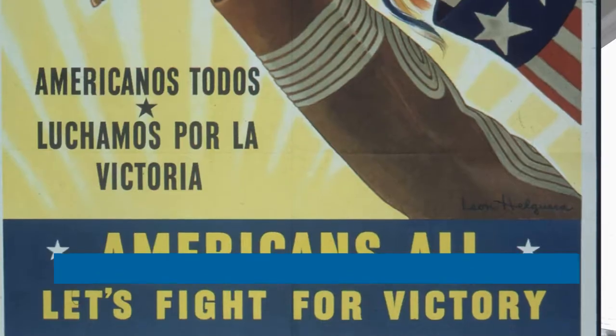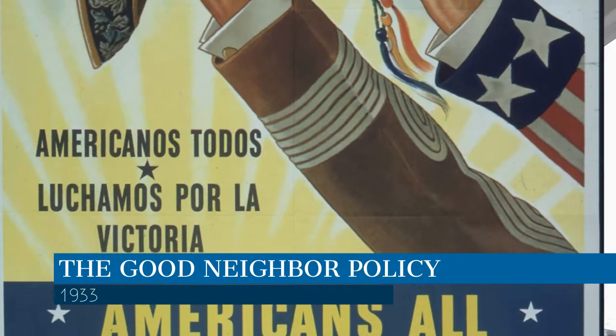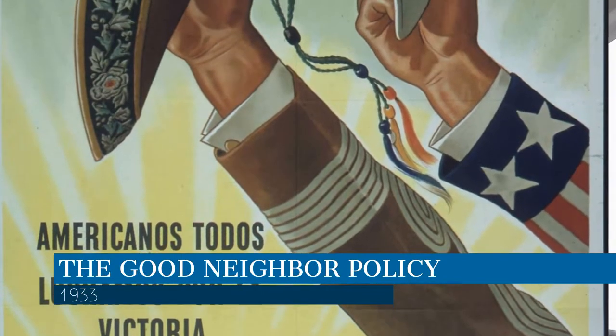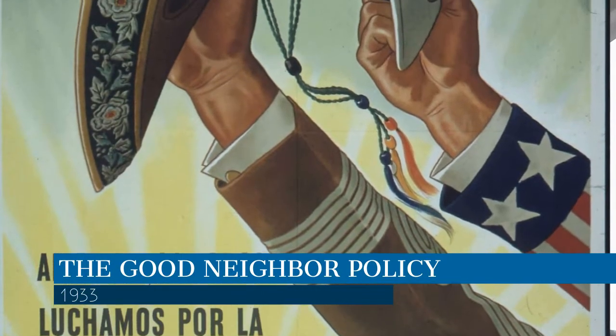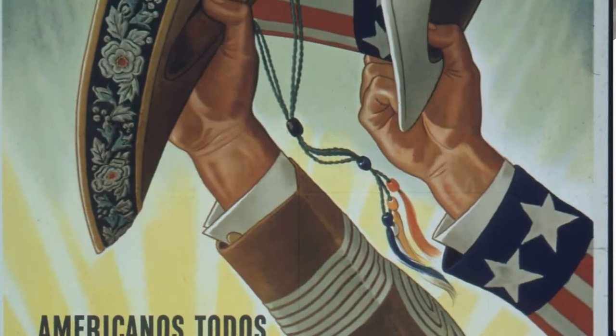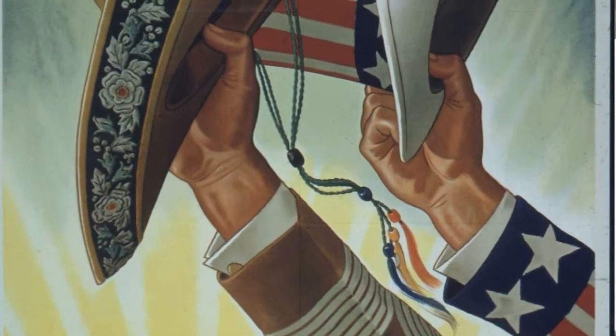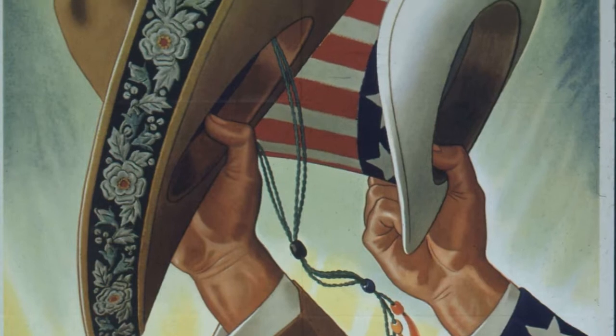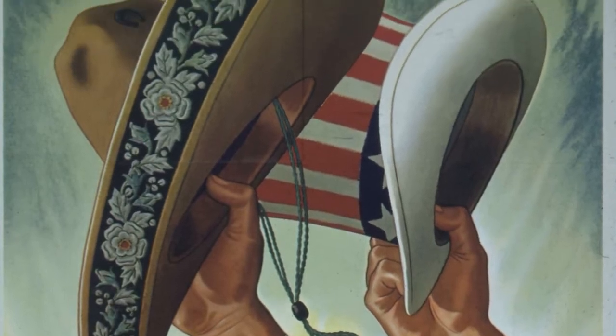The result was the Good Neighbor Policy, which renounced armed intervention in the affairs of Latin American countries. Under the Good Neighbor Policy, FDR freed Cuba from the restrictions placed on it by the Platt Amendment and withdrew American troops from Haiti and Nicaragua. Through the Good Neighbor Policy, the relationship between the United States and countries to the south began to finally improve.